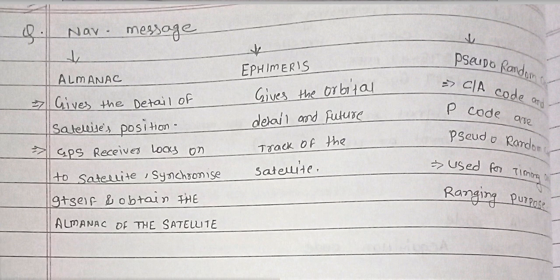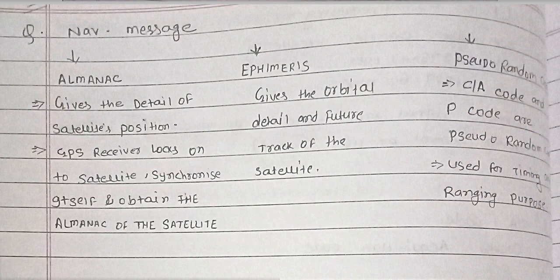Next is the Navigation Message. The navigation message contains three data items. First is Almanac, which gives the details of satellite position. The GPS receiver locks onto the satellite, synchronizes itself, and obtains the Almanac. Second is Ephemeris data, which gives the orbital details and the future track of the satellite. Third is the pseudo random code — CA code and P code — which are used for timing and ranging purposes.